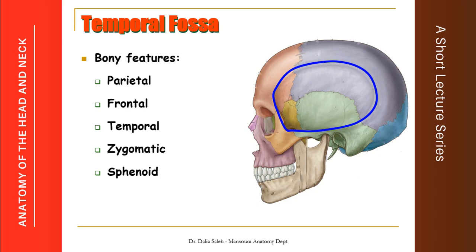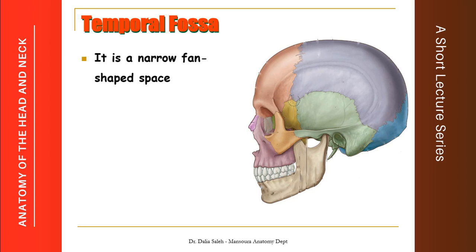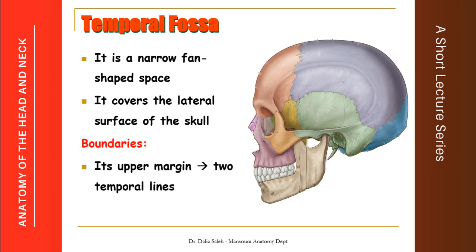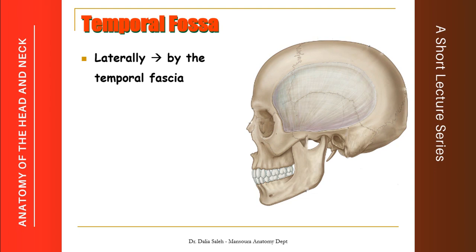This is the boundary of the temporal fossa, which lies on the side of the skull. It is a narrow fan-shaped space that covers the lateral surface of the skull, bounded superiorly by the two temporal lines — the superior temporal line and the inferior temporal line — which is continuous below the zygomatic arch. The lateral wall of the temporal fossa is made by the temporal fascia, a dense connective tissue layer that covers the temporal fossa and is limited below by the zygomatic arch. It is closed laterally but opens inferiorly deep to the zygomatic arch into the infratemporal fossa.